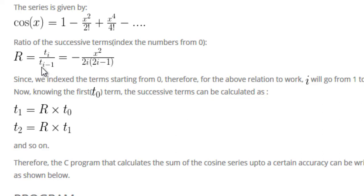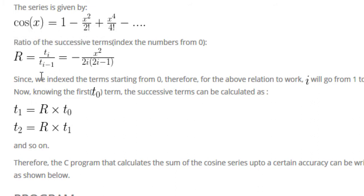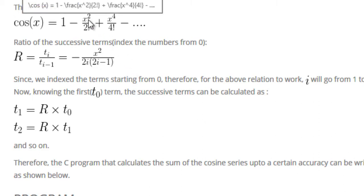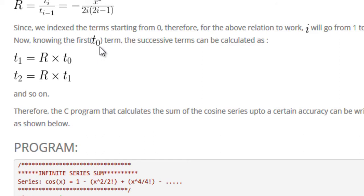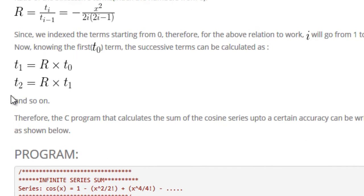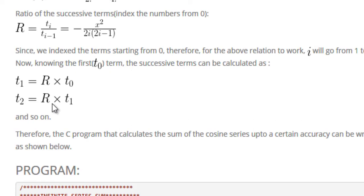If you calculate the ratio ti over t(i-1), you will find it can be written as minus x squared divided by (2i times (2i minus 1)). You just take the ratio of t1 with t0, then t2 with t1, and find the pattern. Once you know this ratio r, you can evaluate successive terms: multiply t0 by r to get t1, multiply t1 by r to get t2, and so on.